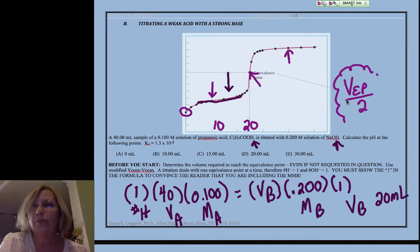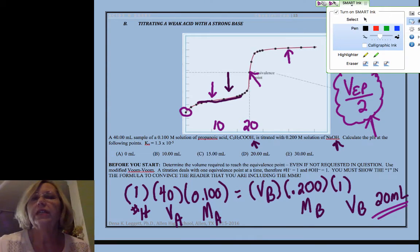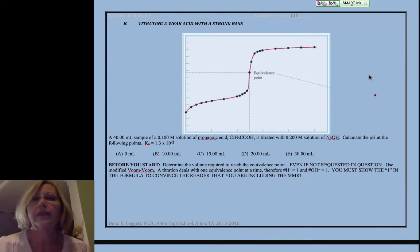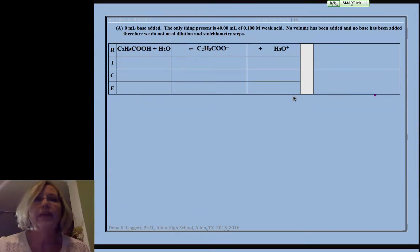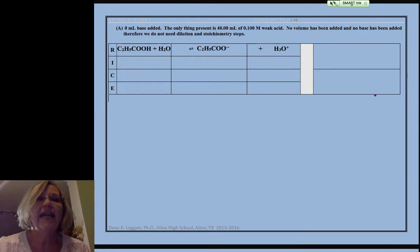That's going to be our easiest point if you can learn something critical about it. That's why we wanted to know that, so we can recognize this volume of equivalence point over 2. Let's look at our first data point with 0 milliliters of base added, our very first data point.